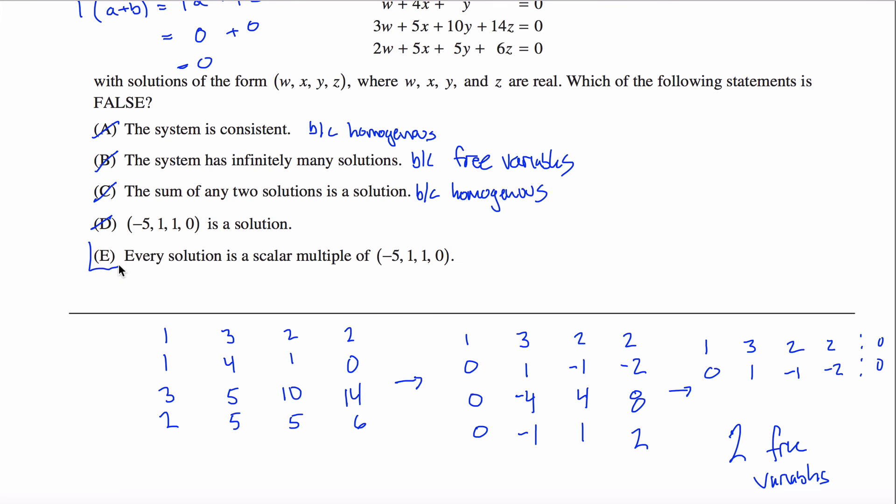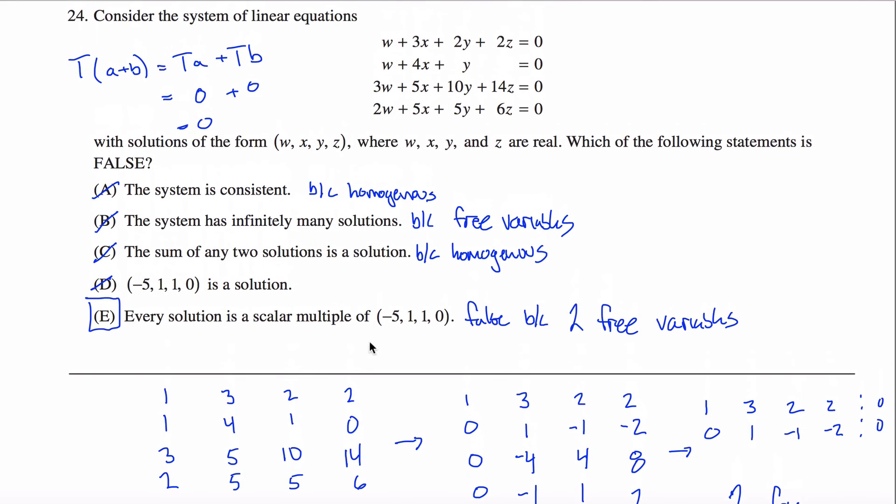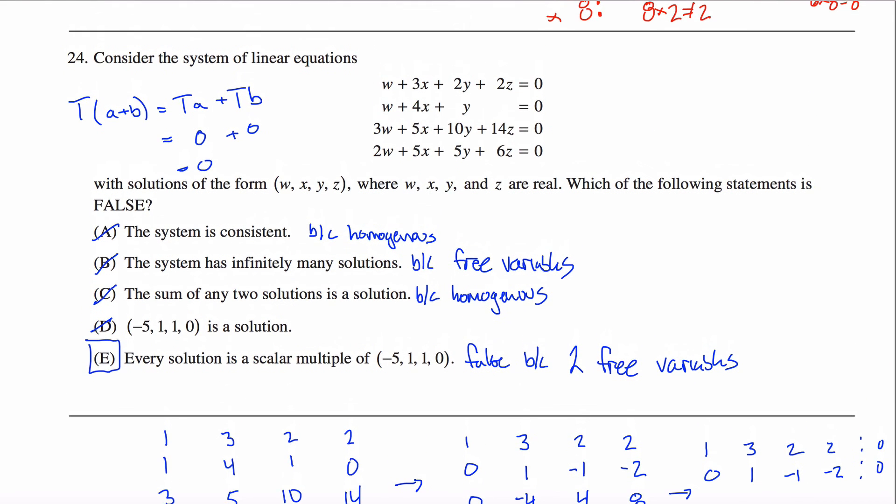I don't know by inspection. So this must be my answer here. Every solution is a scalar multiple, that's a false statement. The reason I know that's a false statement is, let's say false because two free variables. So as I said, my solution set is a plane. Scalar multiples of this guy would be a line. If I had one free variable, then this would be a possibility. But this is false because I have two free variables. You could take some time and come up with specific ones, but you don't need to. You've already determined that this is a false statement here. So I guess I'll end this here.